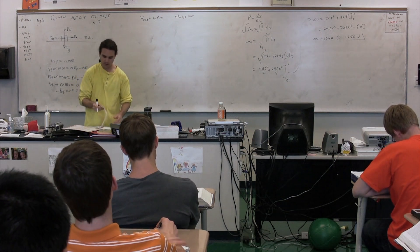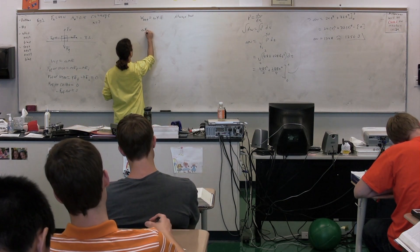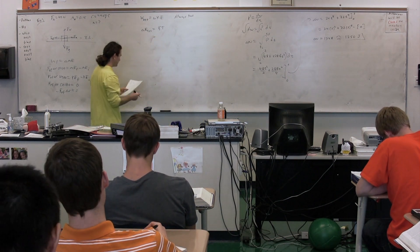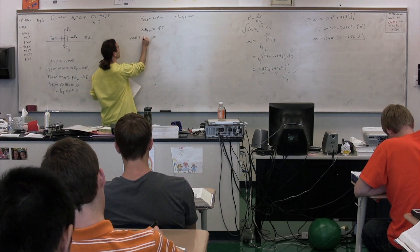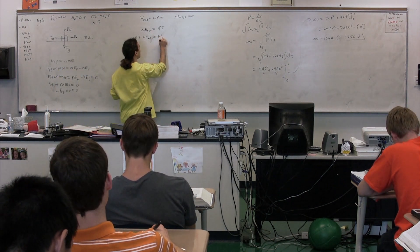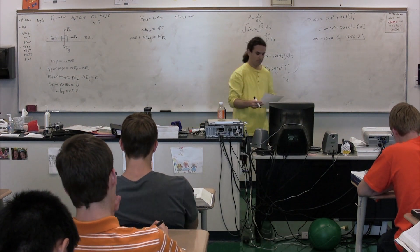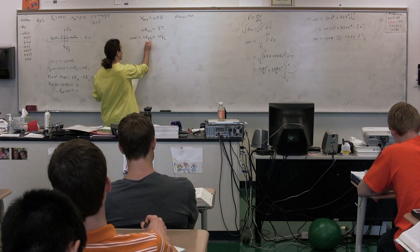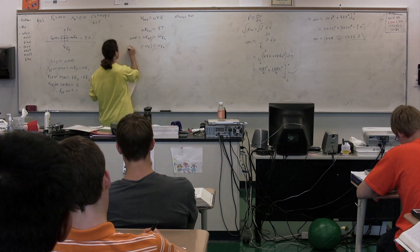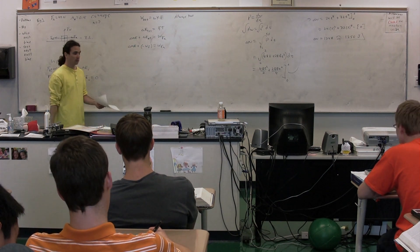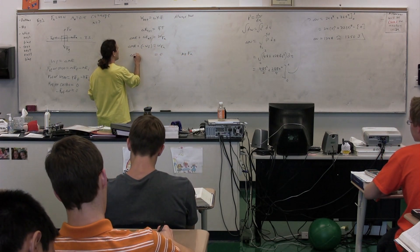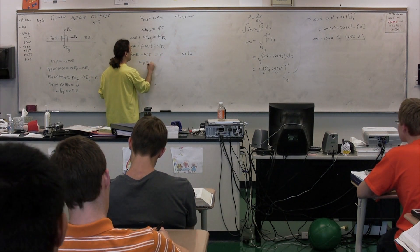We started with: the change in energy of the system equals the energy transferred into or out of the system. The left-hand side is the change in mechanical energy plus the change in internal energy, and the energy transferred is the work done by the applied force. The change in internal energy equals the negative of the work done by friction. So if there is no applied force, work done by the applied force equals zero, and the work due to friction equals the change in mechanical energy.